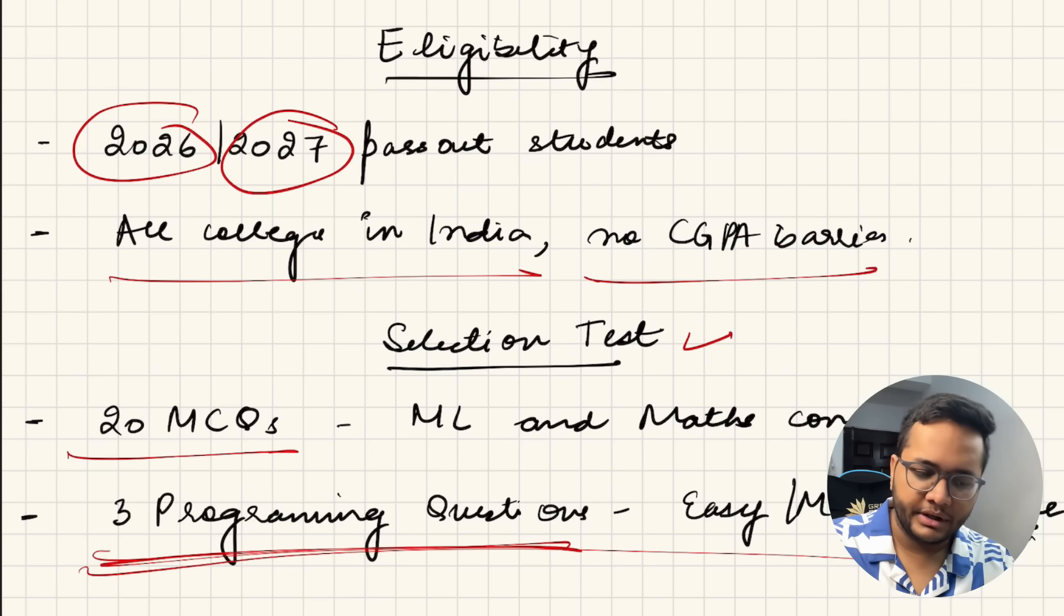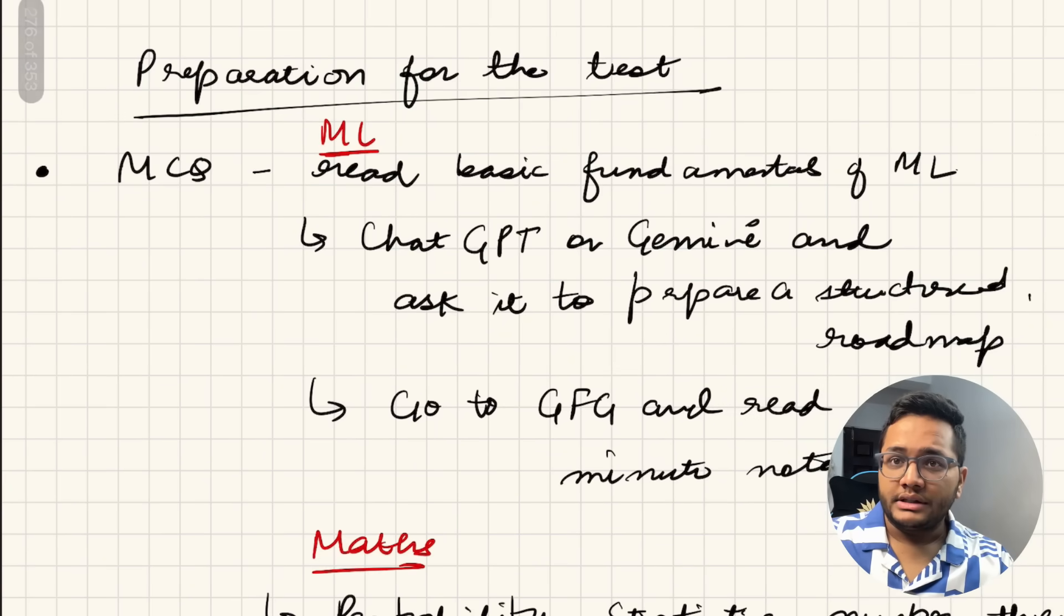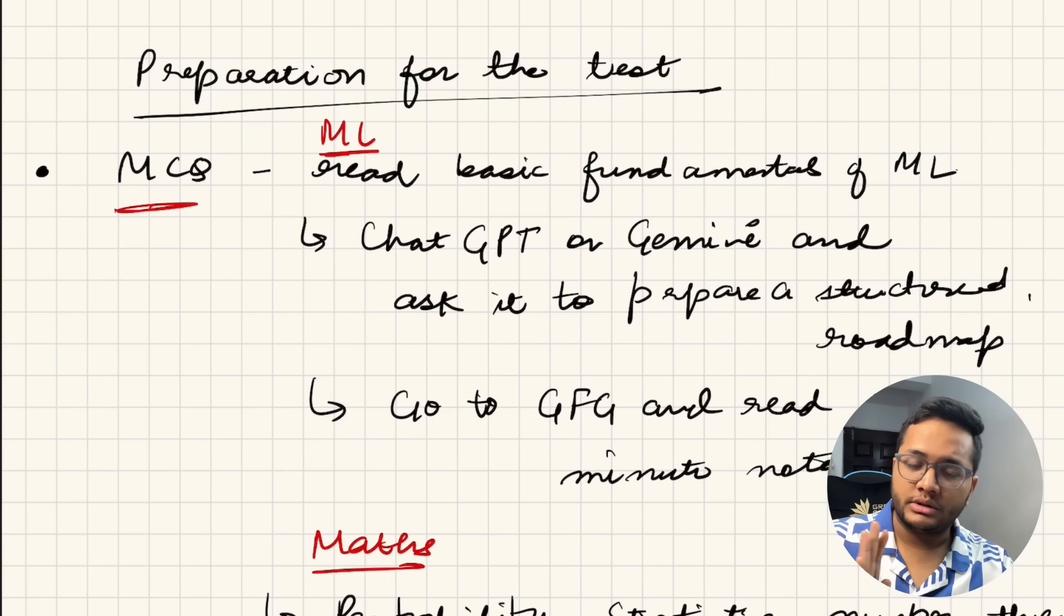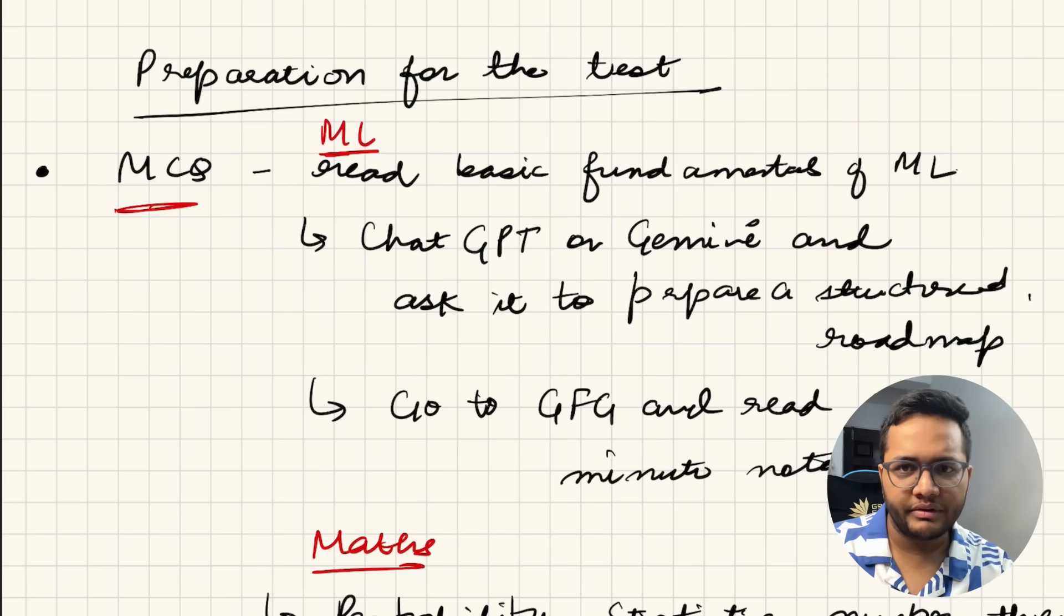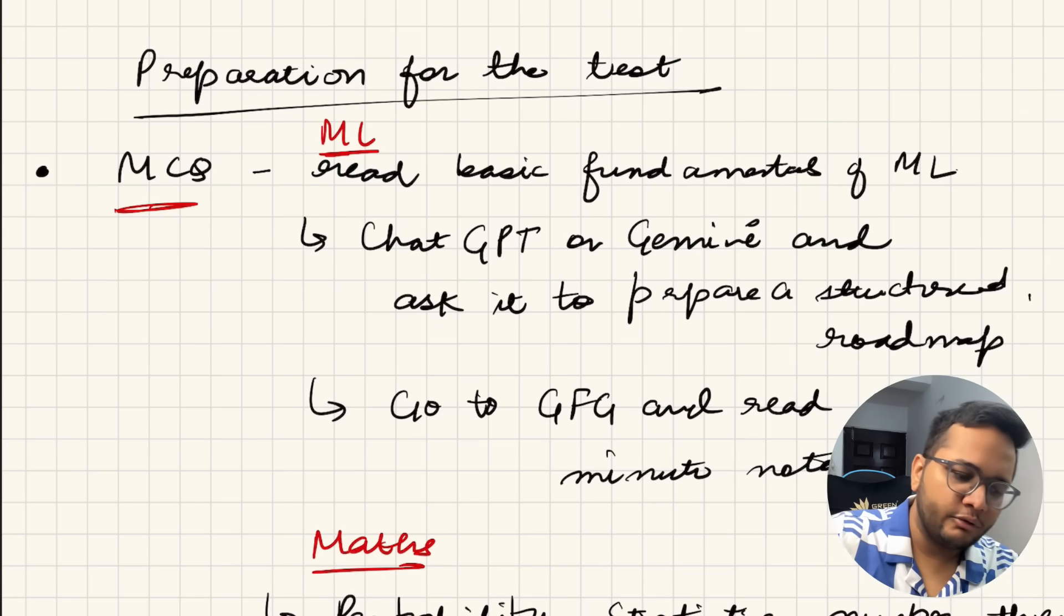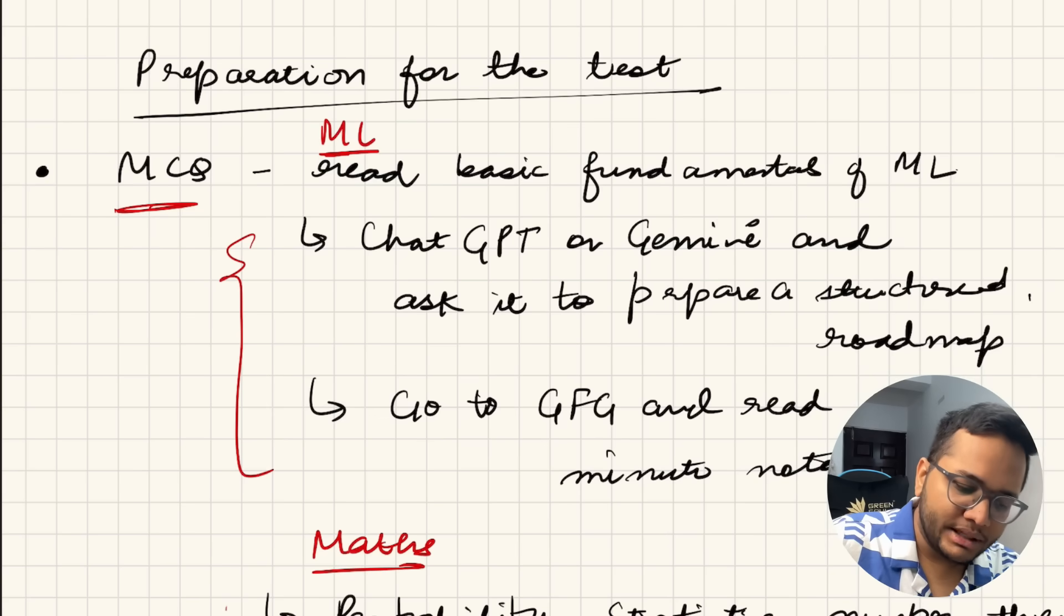Preparation for the test: First round is MCQs. For MCQs, there are two things - 20 MCQs based on ML and mathematics concepts. When it comes to ML concepts, you need to know about the fundamentals of ML well. So go to ChatGPT or Gemini and ask it to prepare a structured roadmap for you to study from beginning to end. It will prepare a structured roadmap that can be covered in around 10-12 hours. Then after that, go to GeeksforGeeks and read last minute notes for machine learning. I think these two would be very helpful. After that, you can ask ChatGPT to create a quiz for you for machine learning concepts, then try solving that quiz and see if you are confident enough.